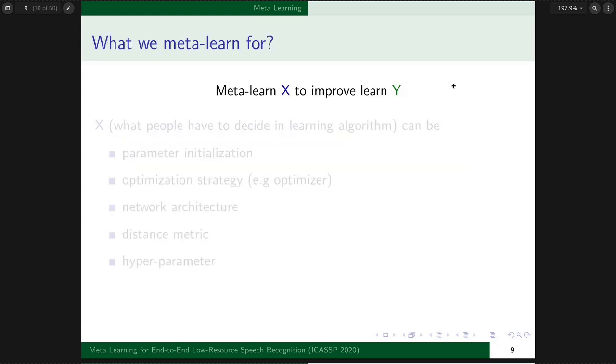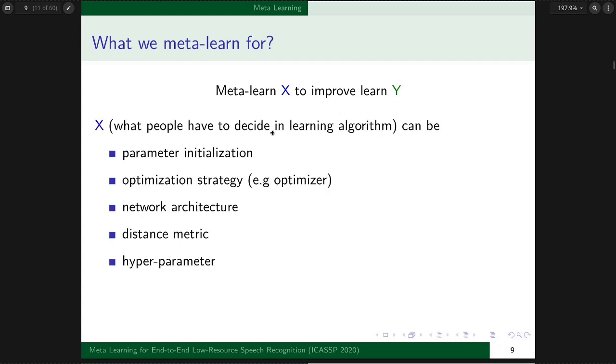What do we meta learn for? We can formulate this as meta learning X to improve Y. X is knowledge beneficial for adaptation during Metatest, or something people need to decide in supervised learning algorithms. Now, we use meta learning methods to automatically decide that.